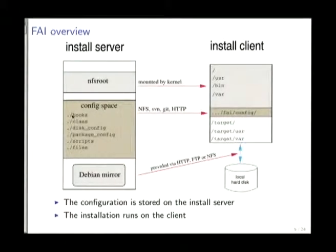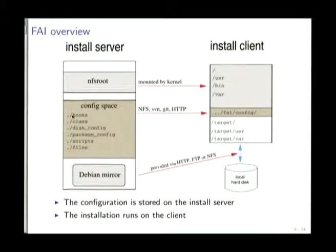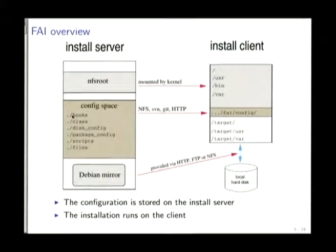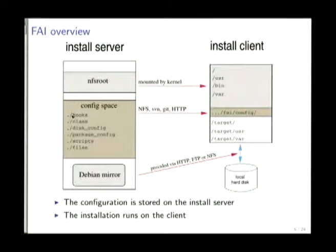Here's a technical overview. On the left side we have the install server. We have three main parts: the NFS root, which is used during the installation on the install client. During the installation, the install client runs as a diskless client. Running as a diskless client gives us full access to the local hard disk so we can partition it, create file systems, and so on. This is the NFS root.